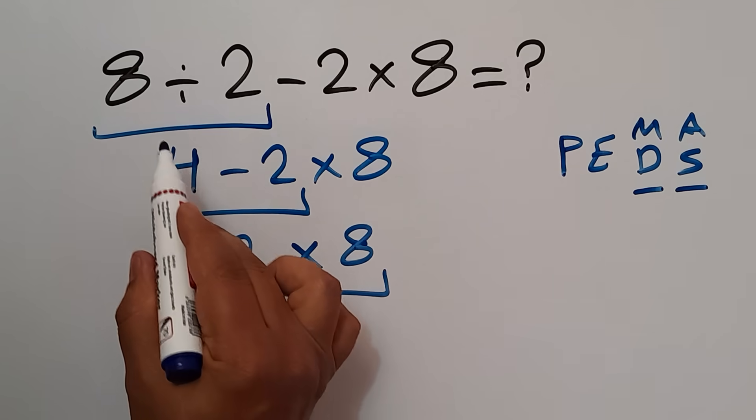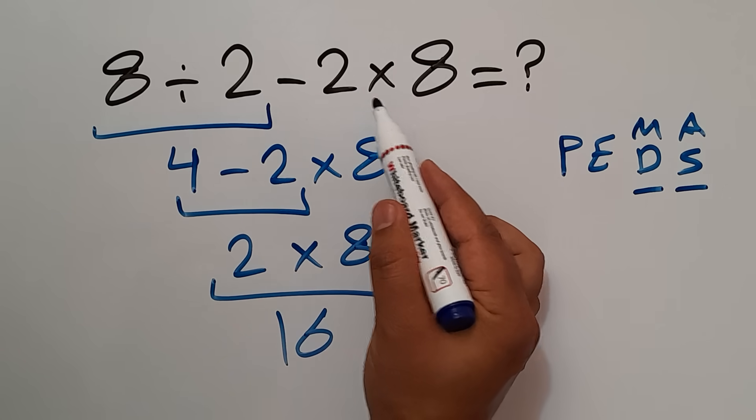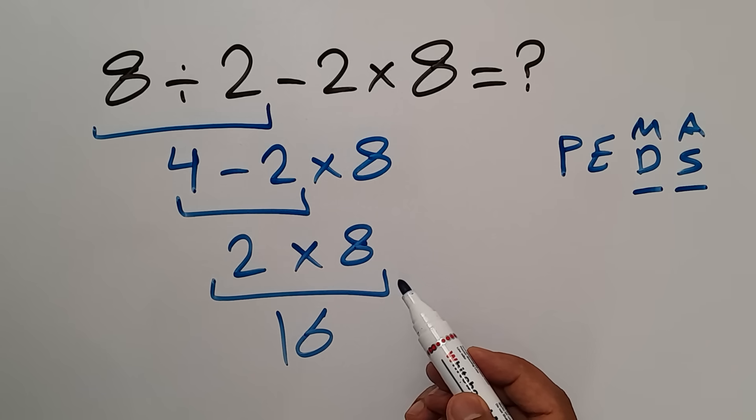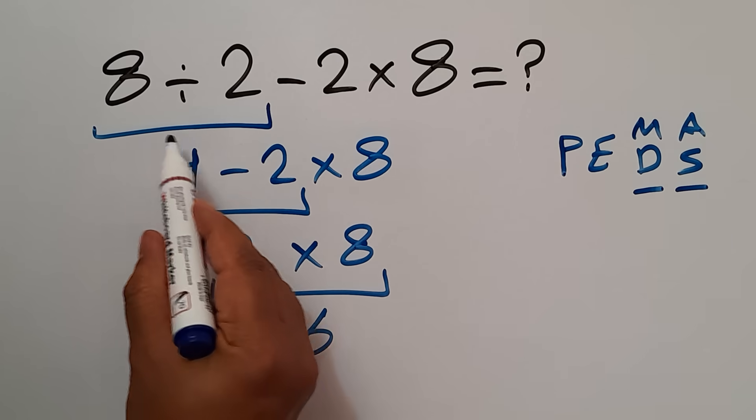Then this multiplication, and finally this subtraction. Okay, 8 divided by 2 gives us 4.